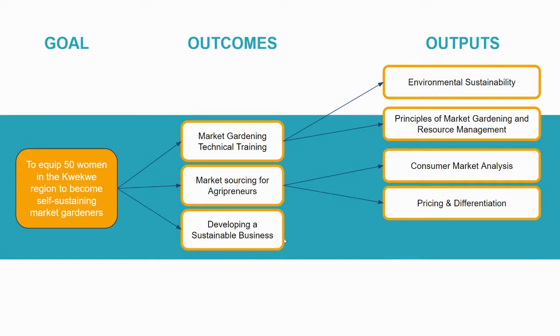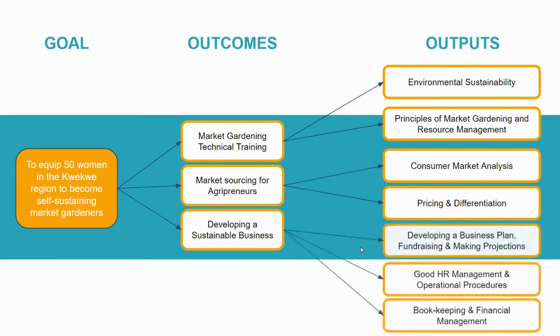Our sustainable business development training could result in its own set of outputs. Our select agripreneurs could end up able to develop a business plan, able to fundraise, able to make projections on their businesses. They could end up with good HR management and operational procedures and bookkeeping as well as financial management skills,